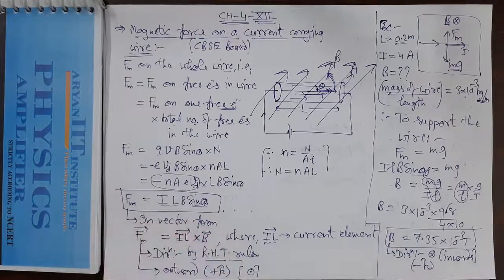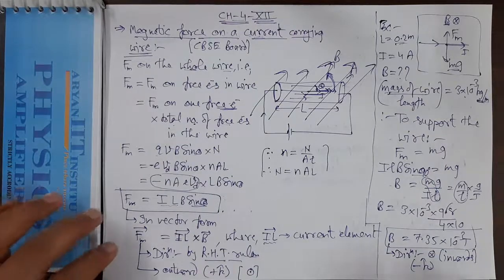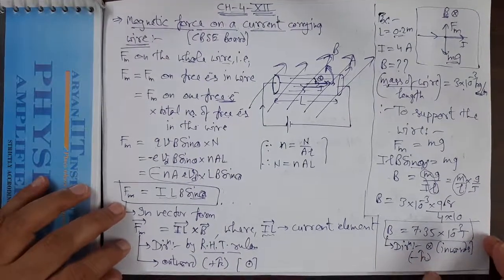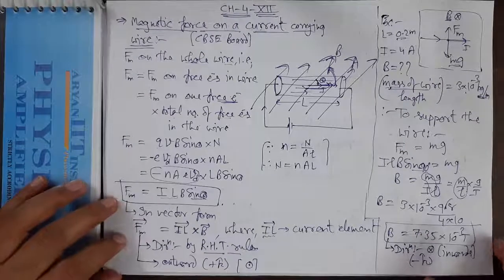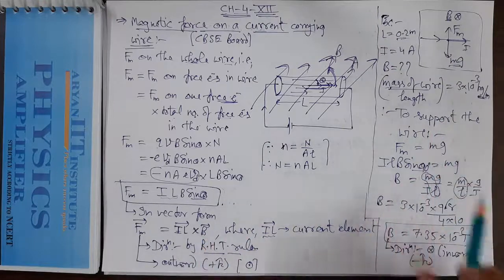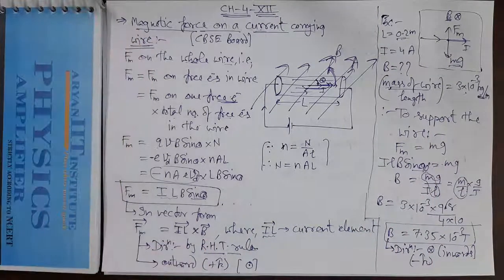So we have covered the concept of magnetic force on a current carrying wire: the derivation of the expression, finding direction using the right hand thumb rule in vector form, and a numerical example. This derivation has directly appeared in the CBSE board exam. That's all for today — thank you all, take care.